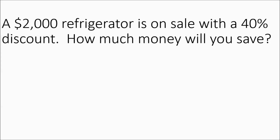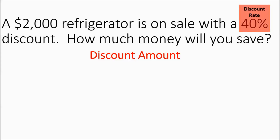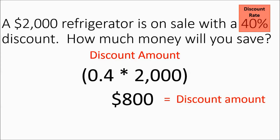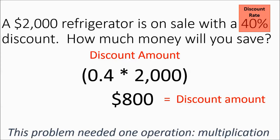A $2,000 refrigerator is on sale with a 40% discount. How much money will you save? They're not asking for the sale price — this is a single-operation problem where you're just going to find 40% of 2,000. You figure out the discount amount by taking your discount rate, making it a decimal, and multiplying: 0.4 times 2,000 gives you $800. That's your discount amount. This was a one-operation problem — only multiplying. If they were asking for sale price, you would have taken that 800 and subtracted it from the 2,000. You always have to give them what they're asking for.